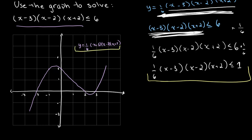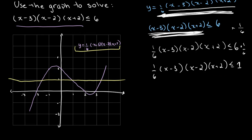Now our inequality matches the equation in the graph. We want to find all points where this equation is less than or equal to 1. So we draw the line y = 1 on our graph and find all places where our curve is less than or equal to it. We can see that from one point going down, the graph is below y = 1, and in another section of the curve it is also less than or equal to 1 — that's between two specific points.